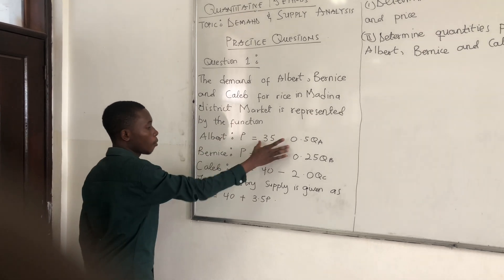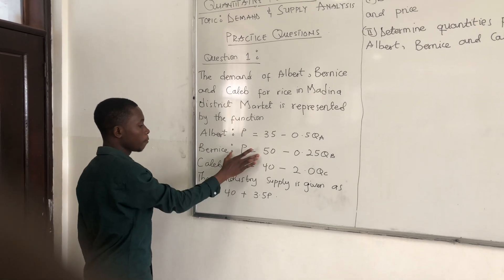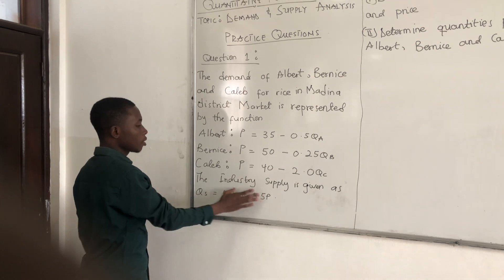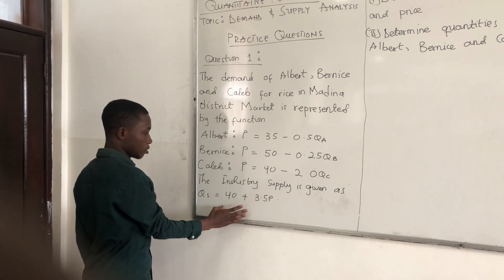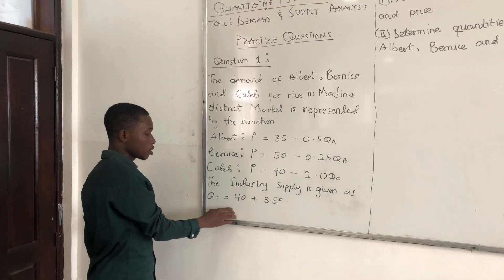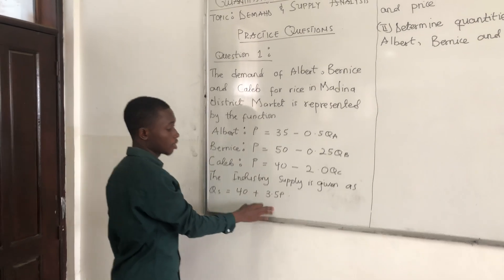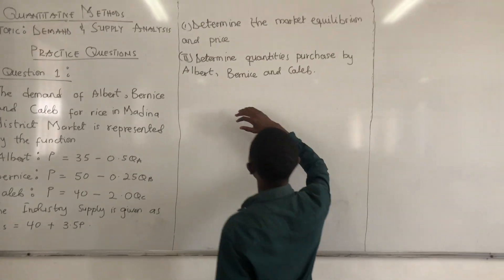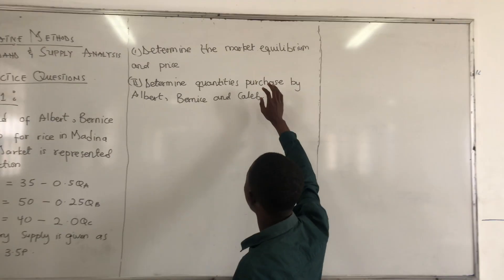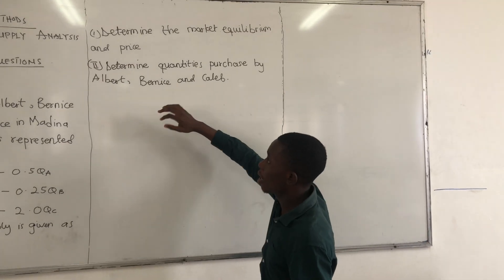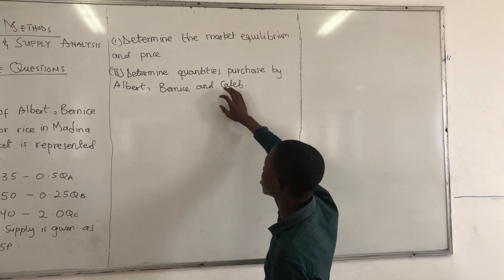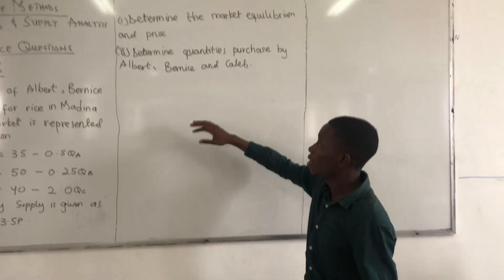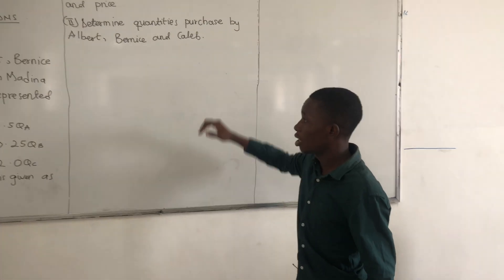That's the function for Albert, function for Benis, function for Caleb. The industry supply is given as QS equals 40 plus 3.5P. Part (a): determine the market equilibrium price and quantity. Part (b): determine quantities purchased by Albert, Benis and Caleb.